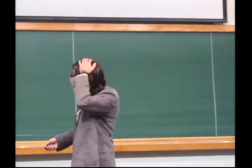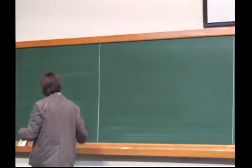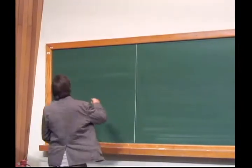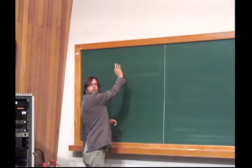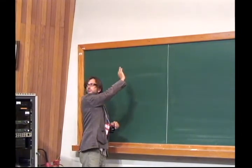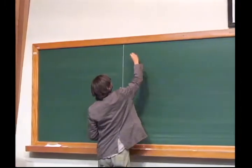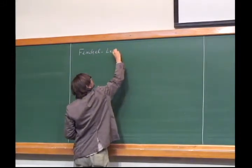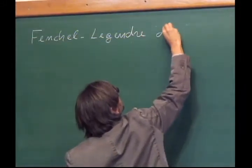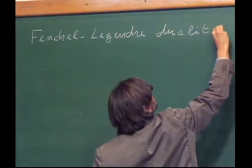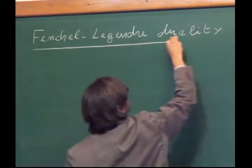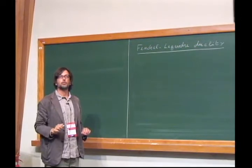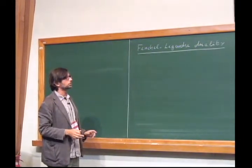Let's start by recalling some simple facts about Fenchel-Legendre duality, just to recall all the notations. This is all very classical, but let me recall everything so that we also use common notation. Our favorite symplectic manifold is the cotangent bundle of some manifold M, where M will always be a closed manifold.